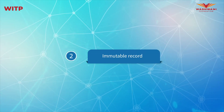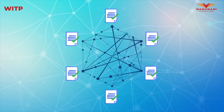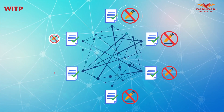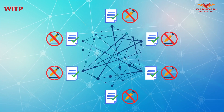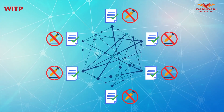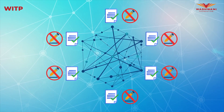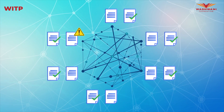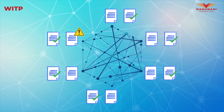Immutable records mean the records cannot be changed. No participant can change or tamper with a record of a transaction after it has been recorded to the distributed ledger. If a transaction record includes an error, a new transaction must be added to reverse the error, and both transactions are then visible.